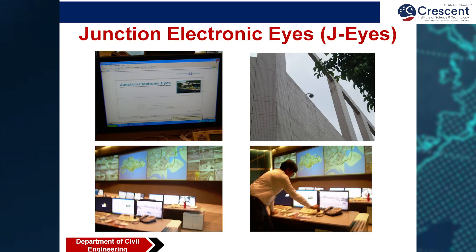Junction Electronic Eye System (JEI): various junctions are experiencing more and more traffic. In order to identify whether traffic is getting congested at an intersection, the Junction Electronic Eye system is provided at all intersections to monitor whether intersections are experiencing heavy traffic.